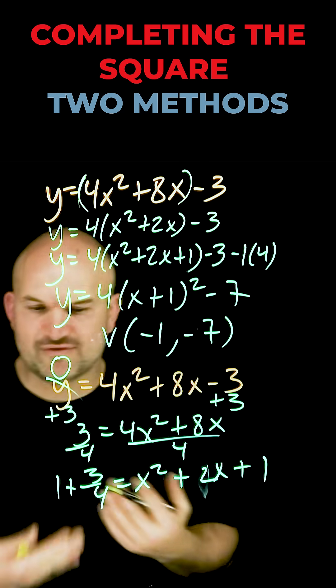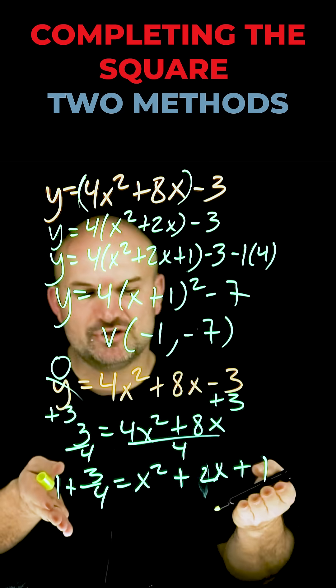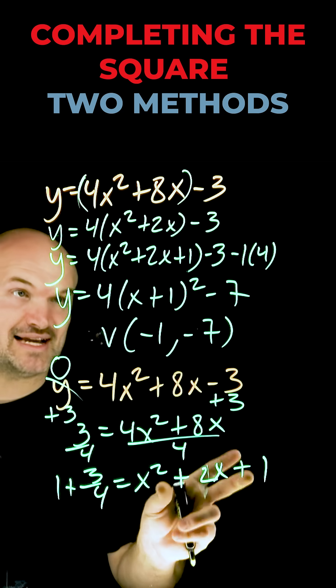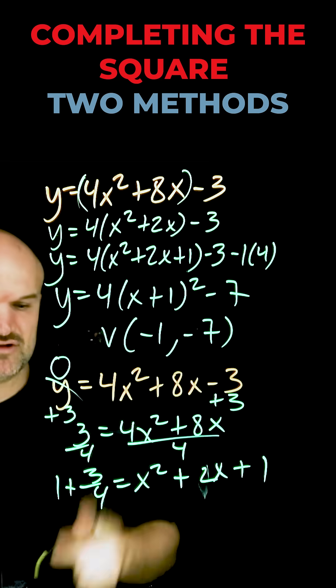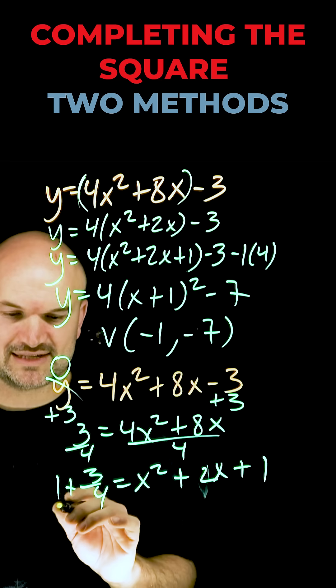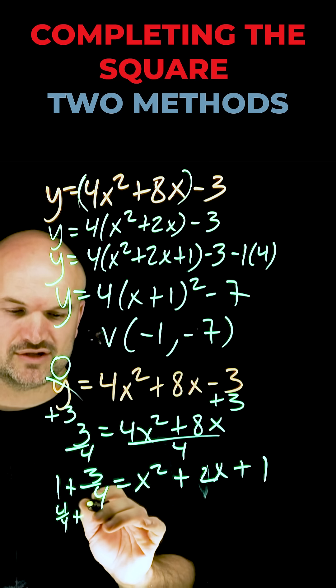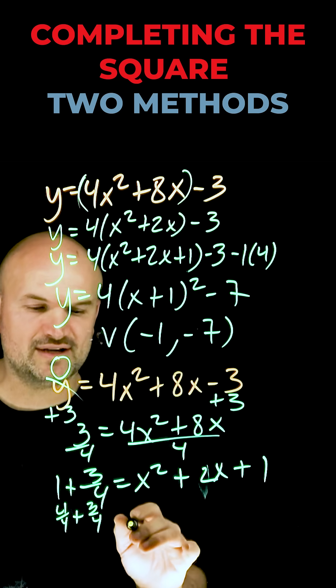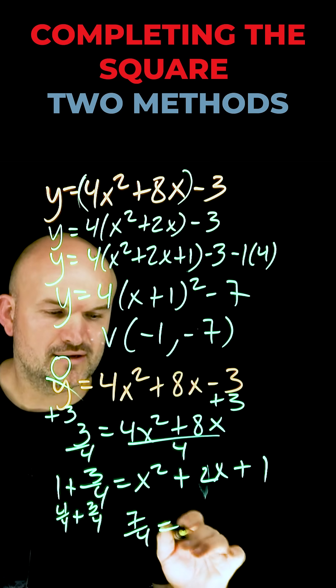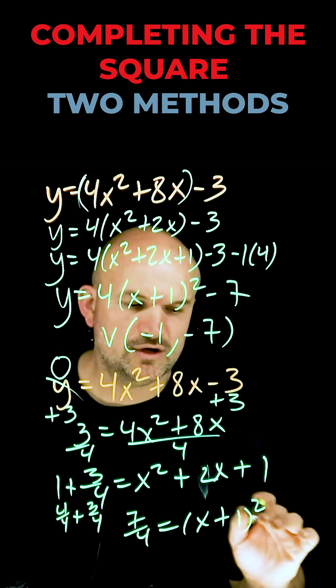1 plus 3 fourths is the same thing as 3 fourths plus 1. So now I'm adding them to both sides. Now you recognize I can again factor this down to a binomial squared, and I can also understand that 1 is the same thing as 4 over 4. So therefore, 4 over 4 plus 3 over 4 is going to be 7 fourths equal to x plus 1 quantity squared.